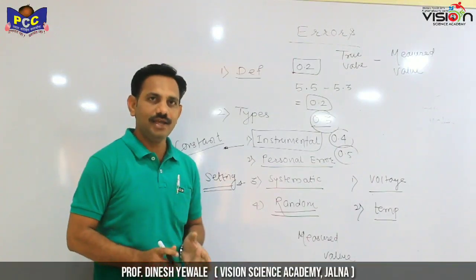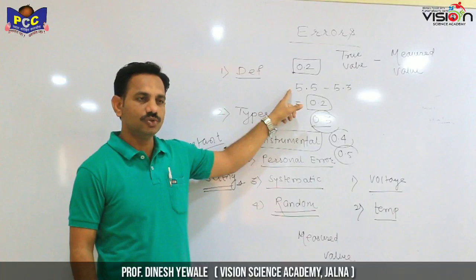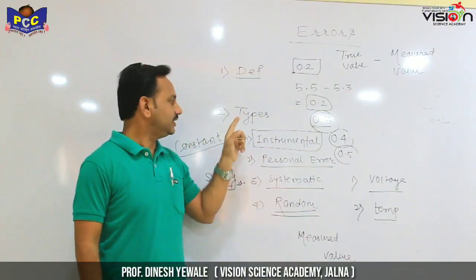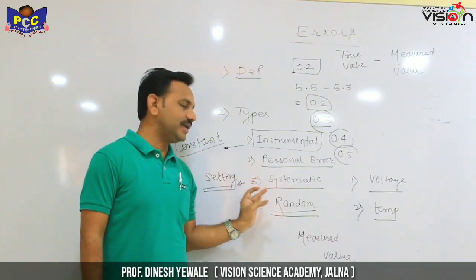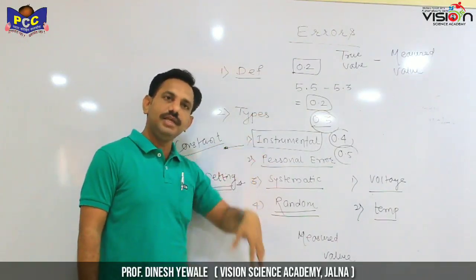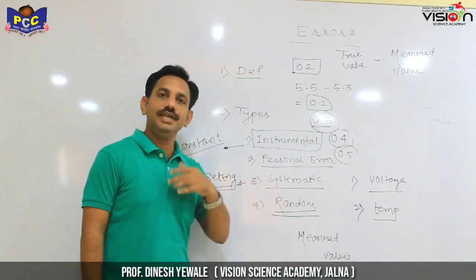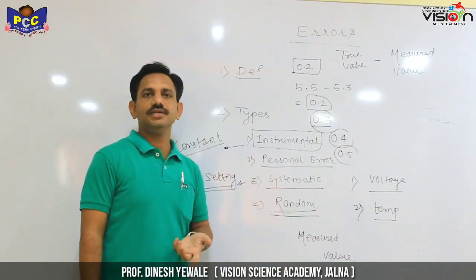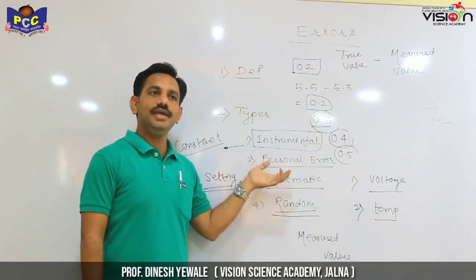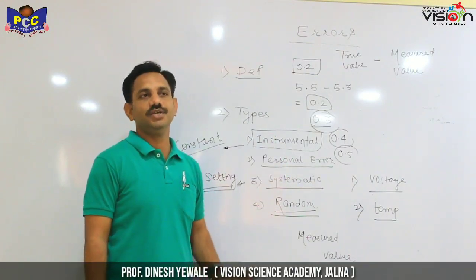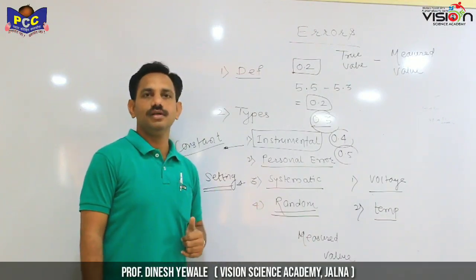Basically, what we have covered is: error definition, error minimization, and the types of errors — which are instrumental, personal, systematic, and random error. The next lecture will continue from here.